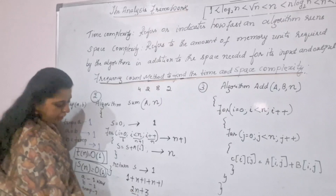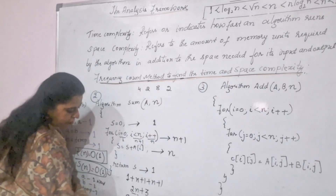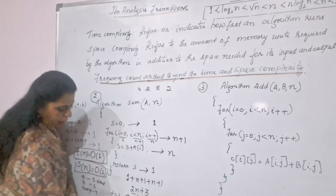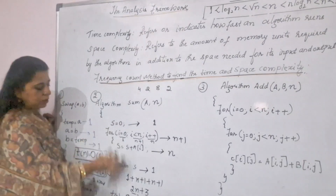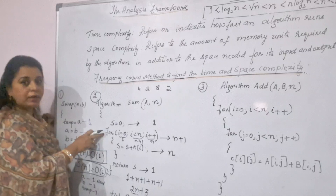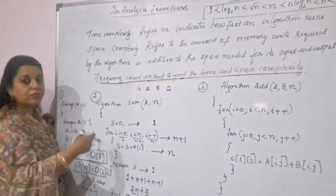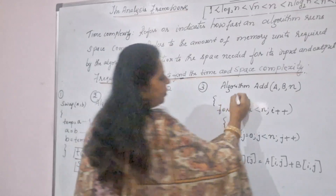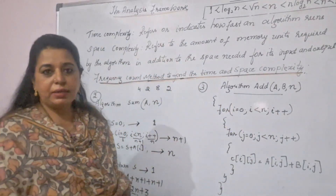From the polynomial 2n plus 3, you ignore the constants and the coefficient of the higher order term. Ignoring the constant leaves 2n; ignoring the coefficient leaves n. So the time complexity for this algorithm is order of n. Now let us take one more example — what if there is one for loop within another for loop? For that I have taken the example of adding two matrices.